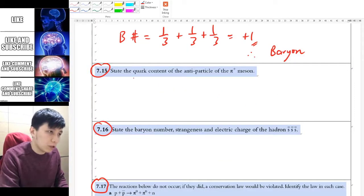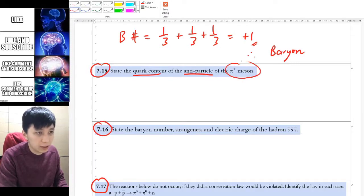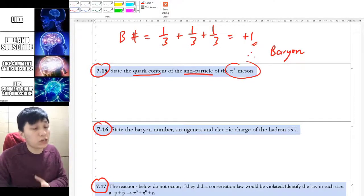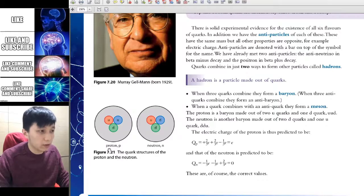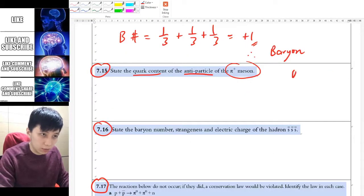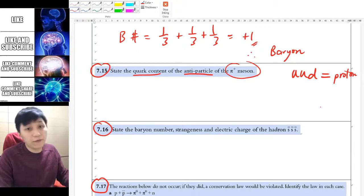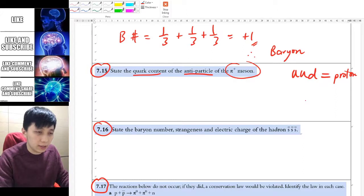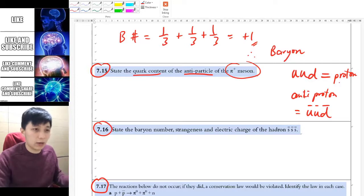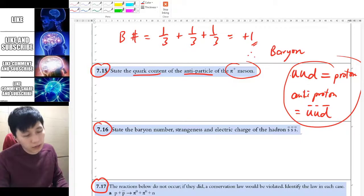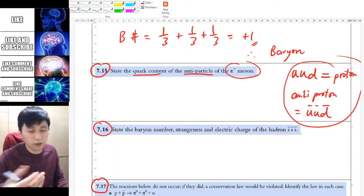Next example: it asks you to find the quark content of the anti-particle of this meson. Let's talk about how to find an anti-particle of a certain particle. If you go back and revisit the quark content of proton, that's UUD. If you want to find the anti-matter of proton, it's simply getting each of these quarks to be its anti-quark: anti-U, anti-U, anti-D. That's the simple trick—how you can find an anti-particle's quark content.